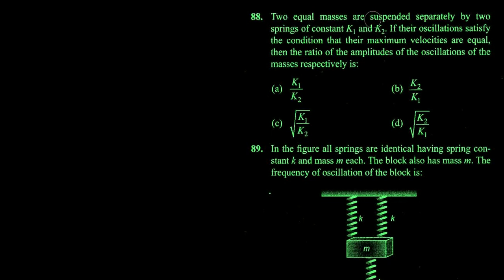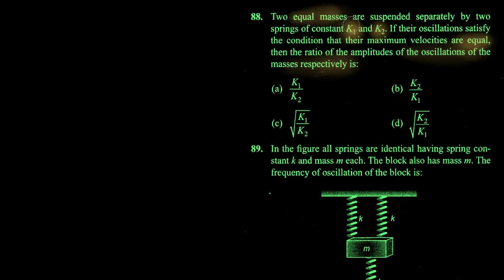Two equal masses are suspended separately by two springs of spring constant k1 and k2. The condition given is that their maximum velocities are equal. Masses are equal, spring constants are k1 and k2, and maximum velocities are equal.